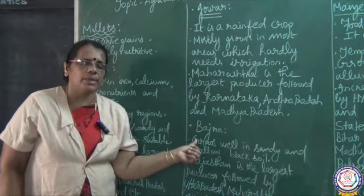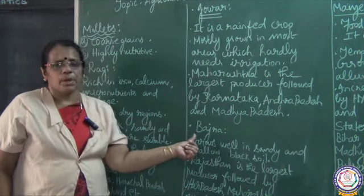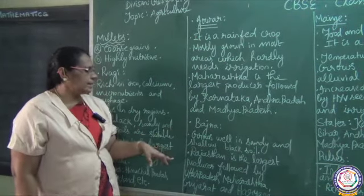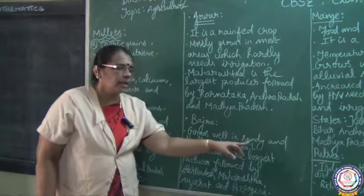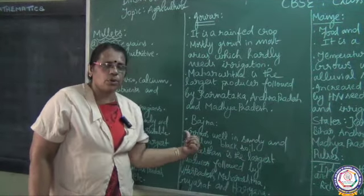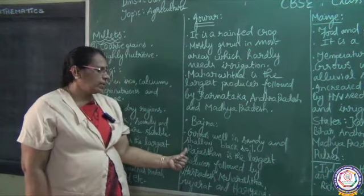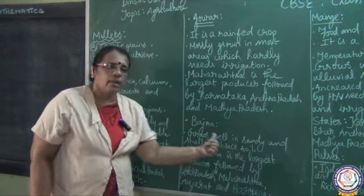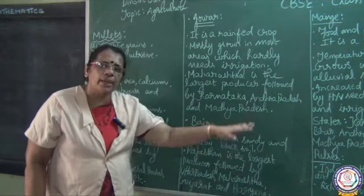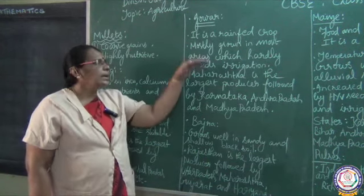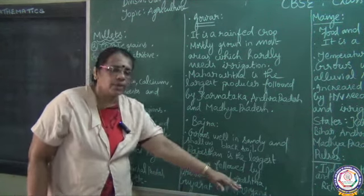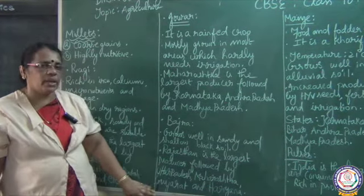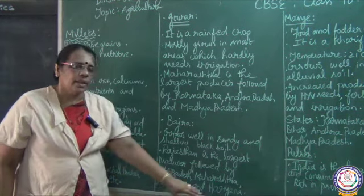The next millet is bajra. Bajra grows very well in sandy soil and shallow black soil. The largest producing state of bajra is Rajasthan, followed by Uttar Pradesh, Maharashtra, Gujarat and Haryana.